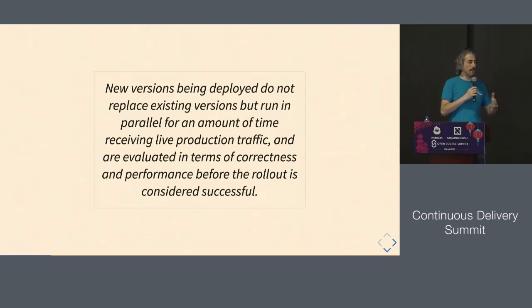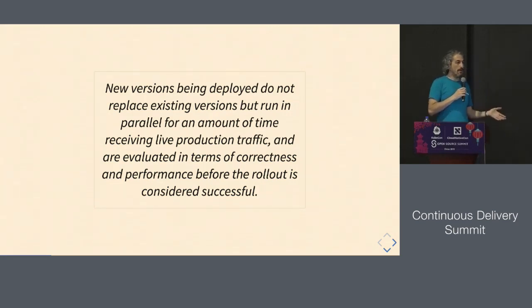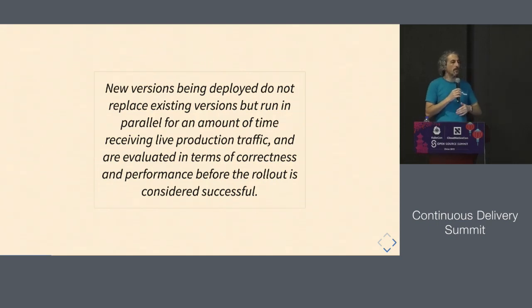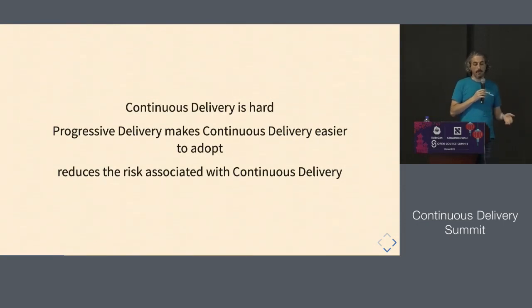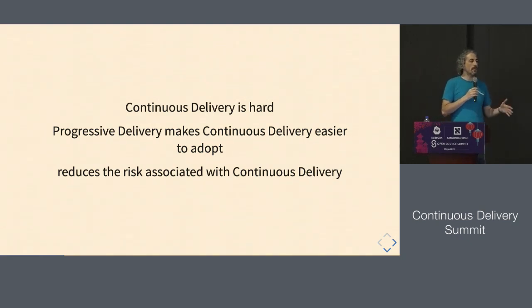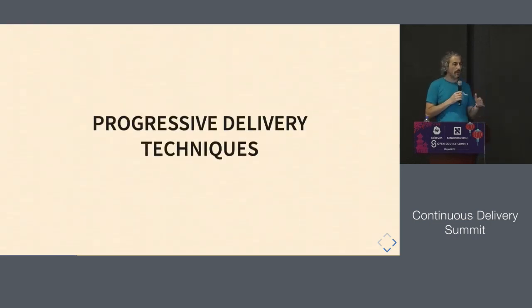When you decide that the new version is okay, then you deploy to the rest of the users. There are some expectations that you're going to have some metrics, monitoring, and logs to decide whether your application is running successfully, and whether you want to continue the rollout or not. Continuous delivery is very hard. Progressive delivery tries to make it easier to adopt because it reduces the risk associated with deploying to all the users at the same time. The concept behind progressive delivery is to make your life easier when you deploy new things into production.